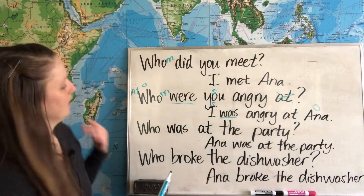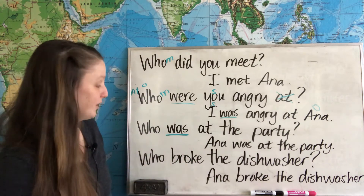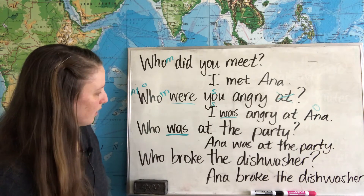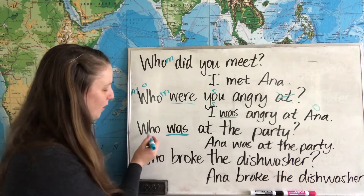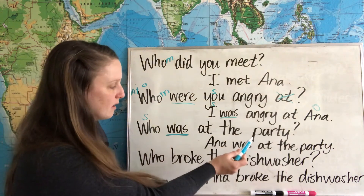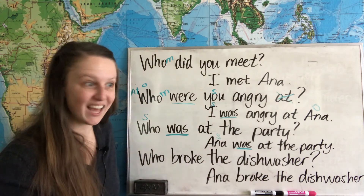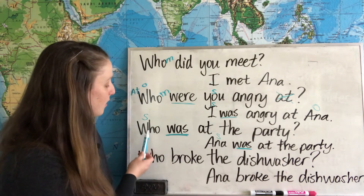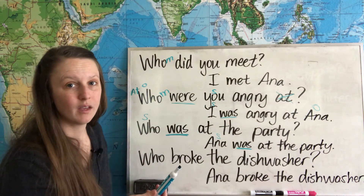We just have two more examples. Who was at the party? Using the first strategy: we find our verb, was, and we need to find the subject. I don't see an obvious subject for this verb, so that gives me a clue that probably who is the subject. Let's check with the second strategy: Who was at the party? Anna was at the party. The subject for our verb is Anna, which is replaced by who. So this is our subject. Remember, when who is the subject of the question, we have to use who — we cannot use whom.